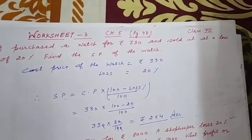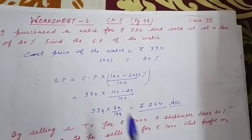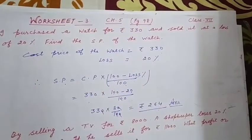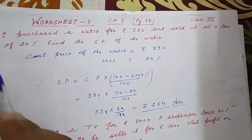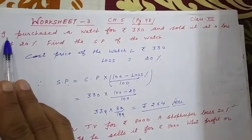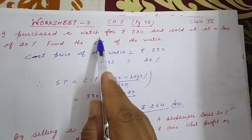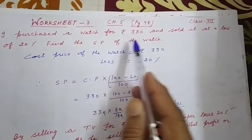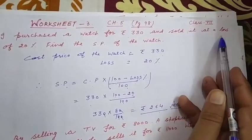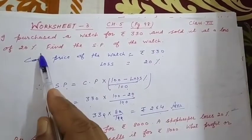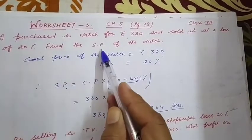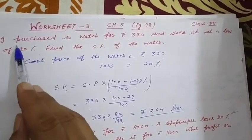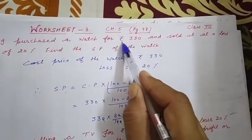Hello everyone, today we are doing worksheet number 3, chapter number 5, page number 98, question number 1. I purchased a watch for rupees 330 and sold it at a loss of 20%. Find the selling price of the watch.